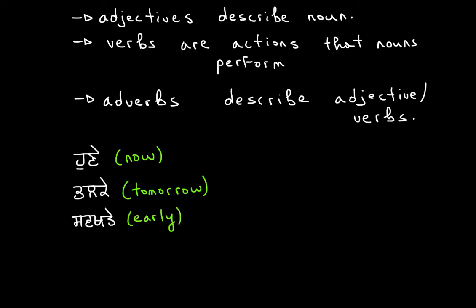Then we want to do early. Early is savkate. This would be early. Then for late we want to have kobele, so we have a kakka, ankar, vava, lama, lala and another lama. So this would be late.